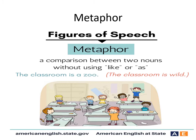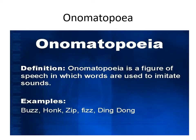Another example: 'He is the Shakespeare of our class' has a sense of comparison. 'Richard fought like a lion' — that is a simile. But if I say 'Richard was a lion in the fight,' the meaning is the same but it is a metaphor. The difference: simile uses 'like' or 'as,' metaphor does not.